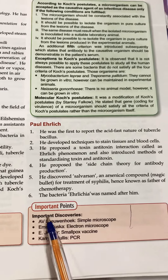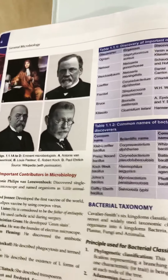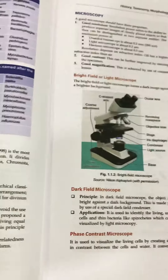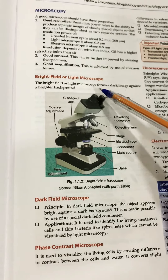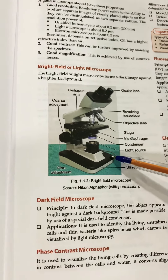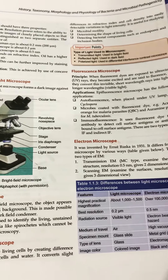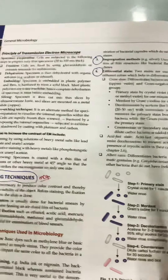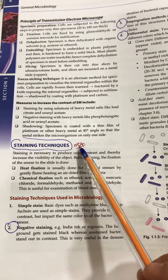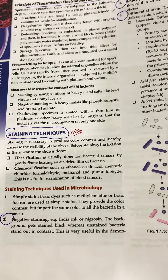Important discoveries mentioned in the book — you need to do those. After that, have a look at the diagram showing the various parts of the bright-field microscope for a general review. Then coming on to staining techniques — a very important topic. The basic staining, simple staining, gram positive, gram negative, and then negative staining, which is very important.